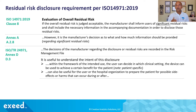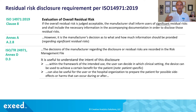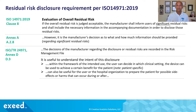What is the intent behind this disclosure requirement? In Annex D of ISO TR 24971, they tell you that within the framework of the intended use, the user can decide in which clinical setting the device can be used to achieve a certain benefit for the patient — it could be patient-specific. You want the disclosure to help the decision be made for a specific patient in a specific clinical setting. It can also be useful for the user or hospital organization to prepare the patient for possible side effects or harms that can occur during or after.